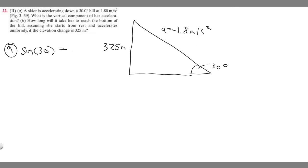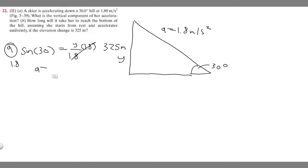So the hypotenuse, which goes on the bottom, is going to be 1.8. The vertical component — which we don't know yet, and that's what we're trying to find — I'll call it Y. To solve for it, all we've got to do is multiply both sides by 1.8. So 1.8 times the sine of 30 gives us Y, our vertical component. Plugging this into the calculator, A-sub-Y is going to be equal to 0.9 meters per second squared.